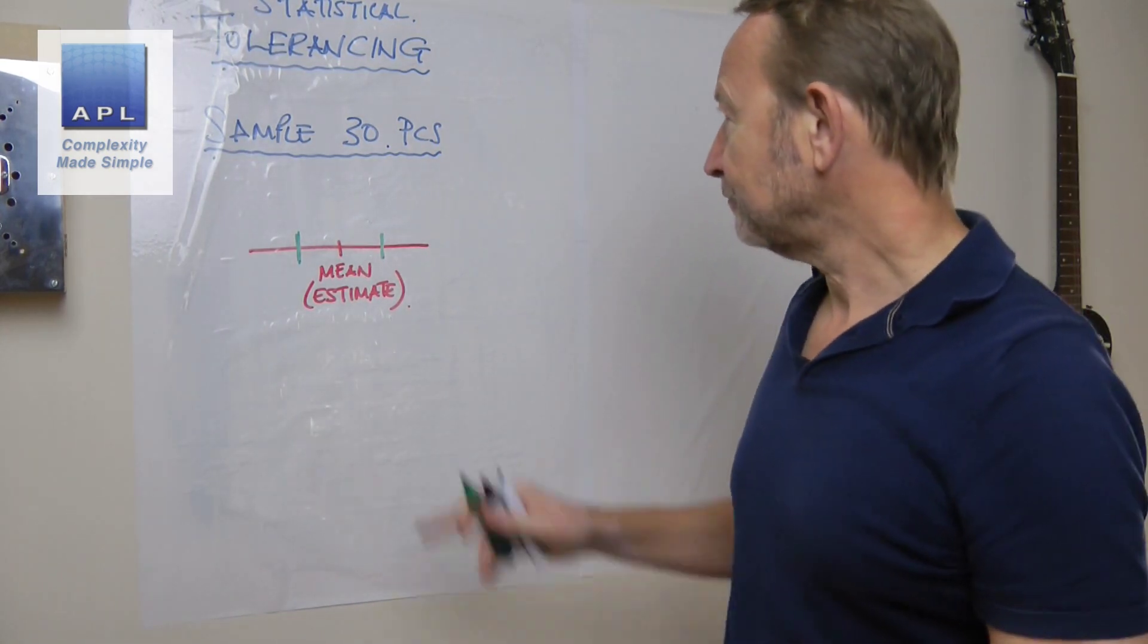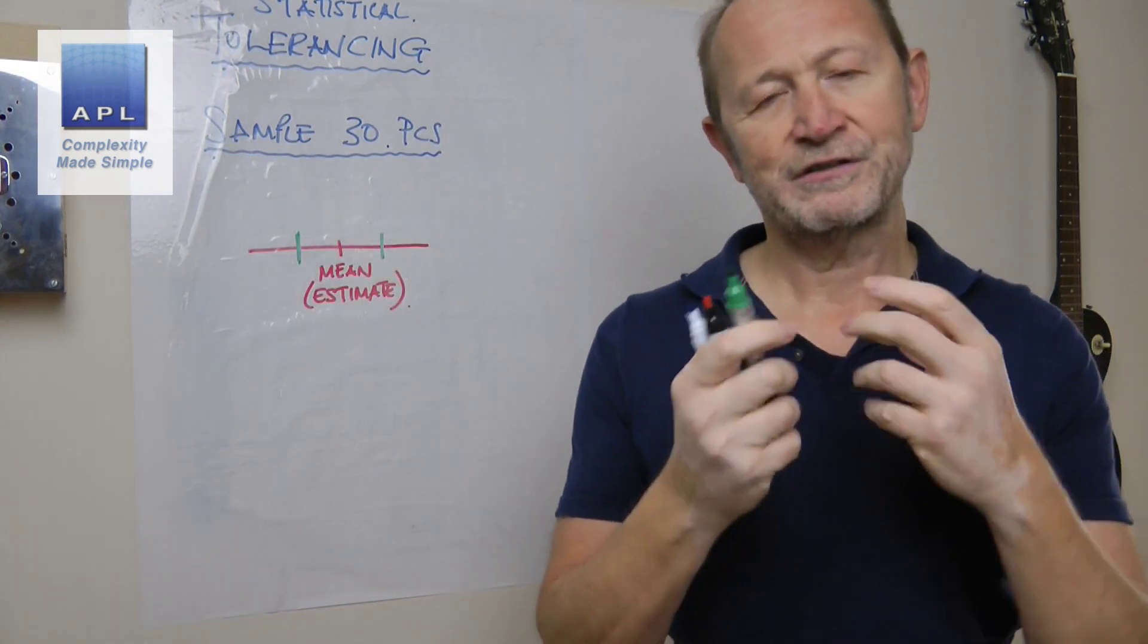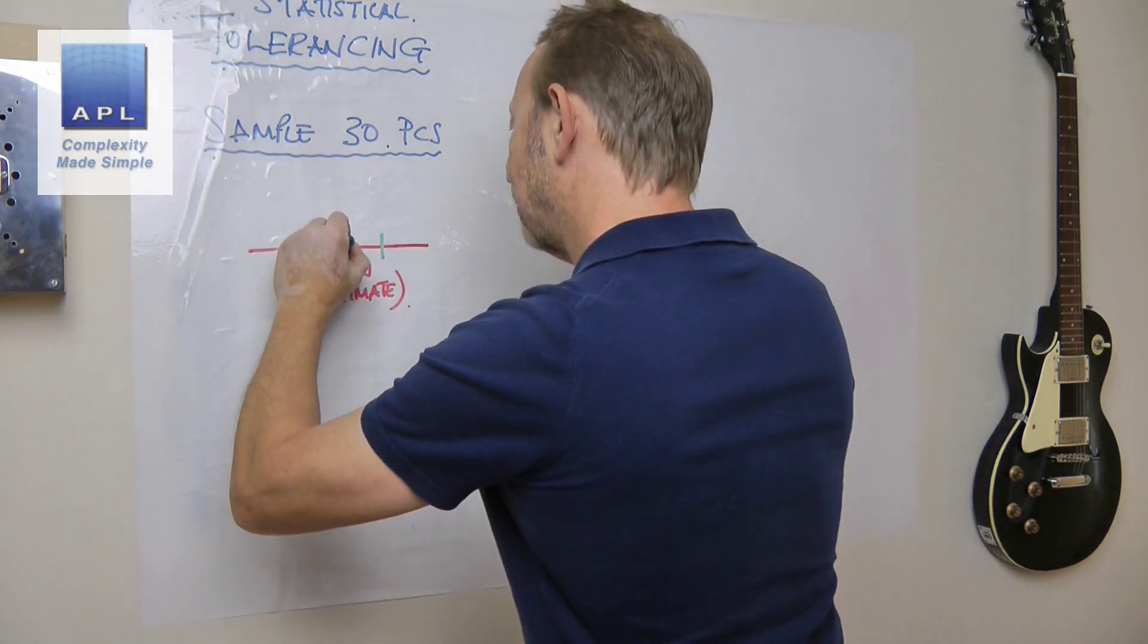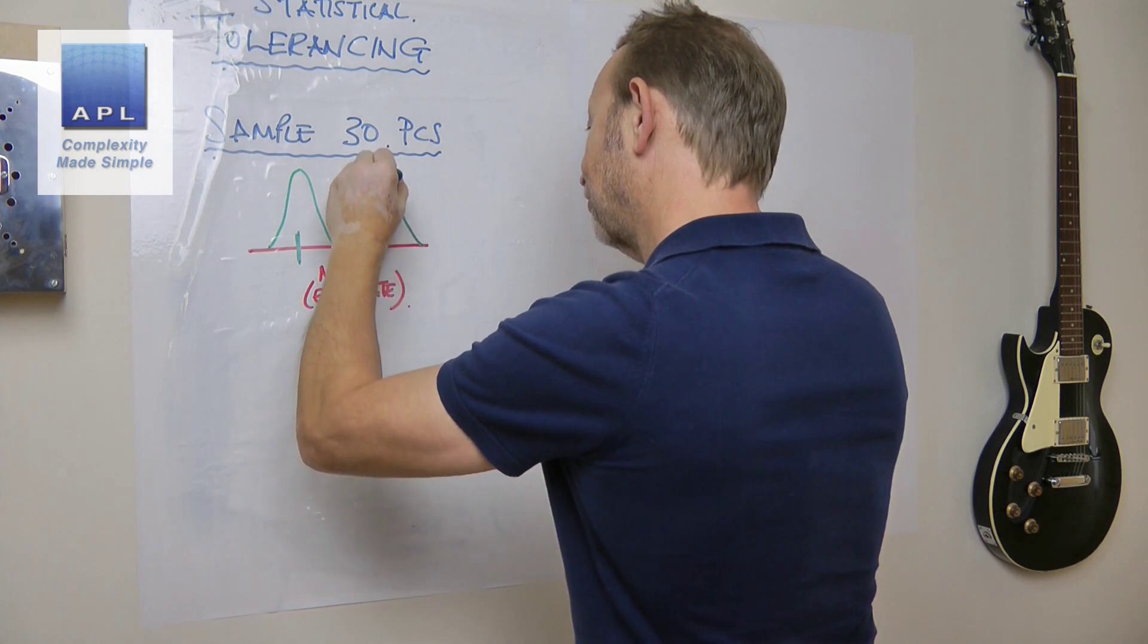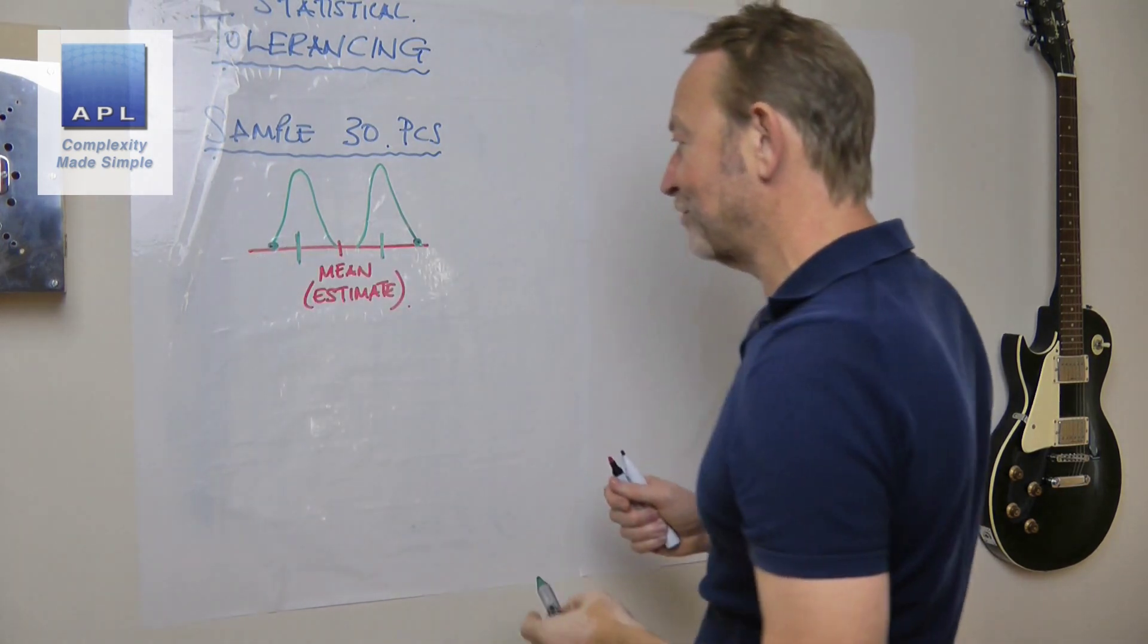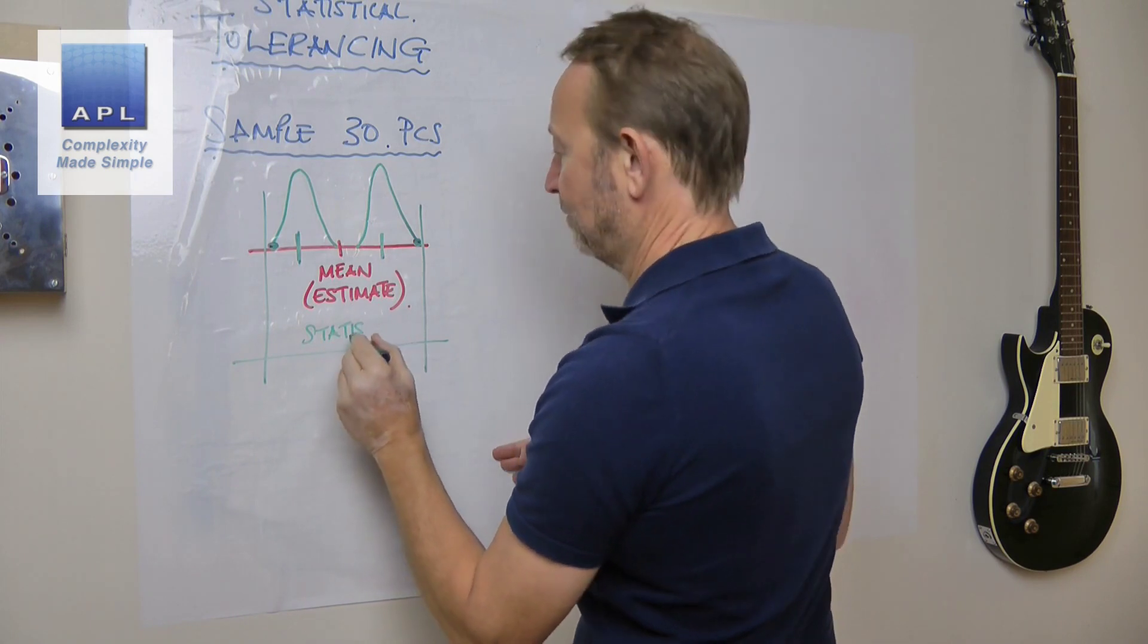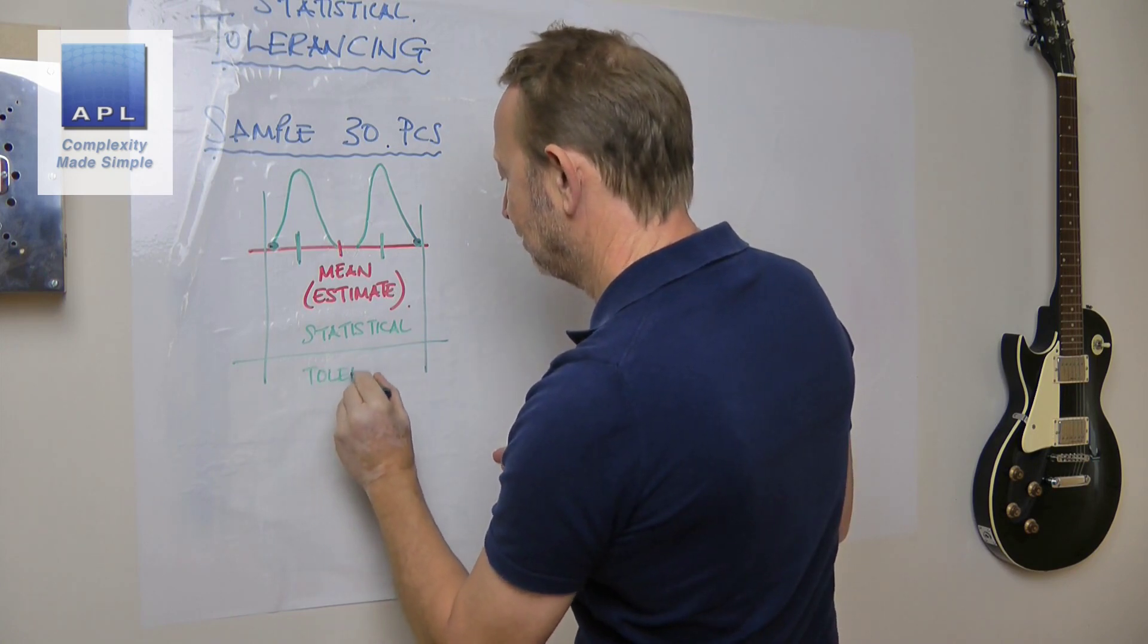Now what this thing is doing is building on top of that - the distribution. So it's now saying, well, if my center could be there and it could be there, if I put my distribution generated by my 30 results, I could have data all the way over here, I could have data all the way over here. And this - I can never spell 'statistical' - this is my statistical tolerance.